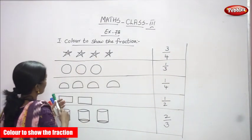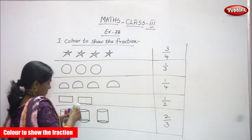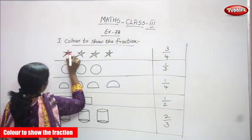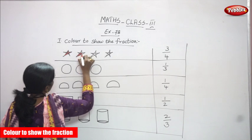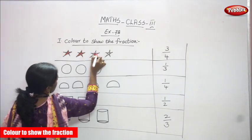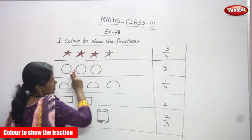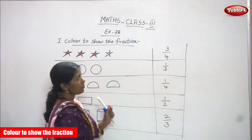So we have to color 3 stars because the total number of stars is 1, 2, 3, 4 stars. We have to color only 3 stars, that is 3 by 4. So I colored 3 stars, that is called as 3/4. This is the total number of stars is 4. I have colored only 3 stars, that is called as 3 by 4 or 3/4 fraction.